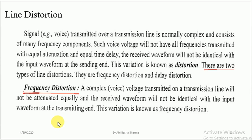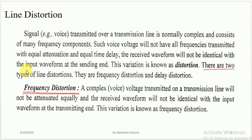First of all, we have to discuss what we mean by distortion. Distortion means some type of disturbance that will occur inside the signal — it may be a voice signal, audio, video, whatever. Whenever a signal transmitted over a transmission line is normally complex and consists of many frequency components, those components will not be transmitted with equal attenuation and equal time delay. So the received waveform will not be identical with the input waveform at the sending end, and this variation is called distortion.